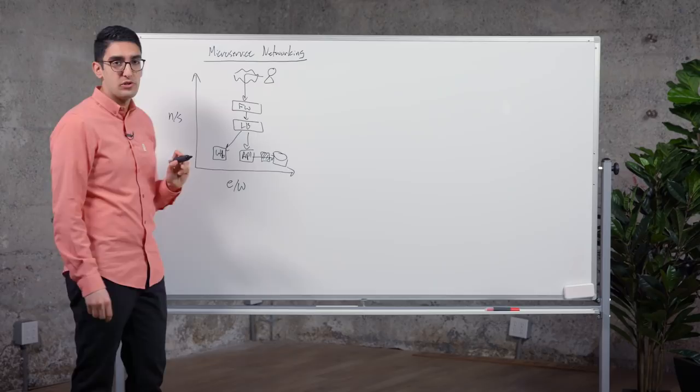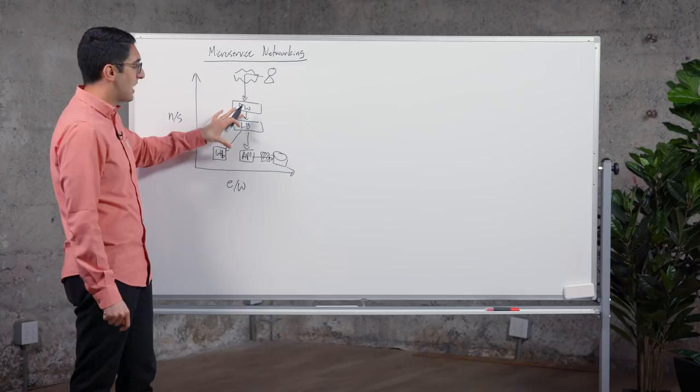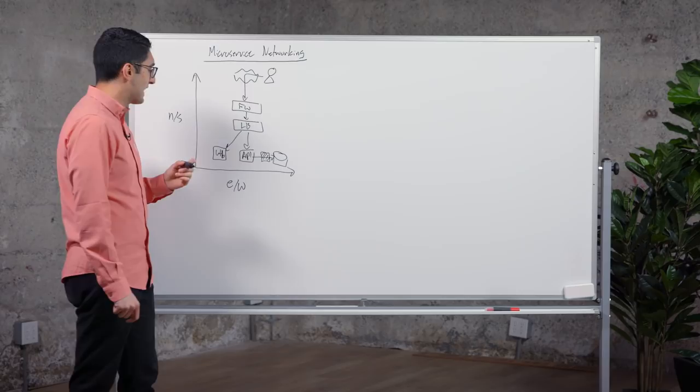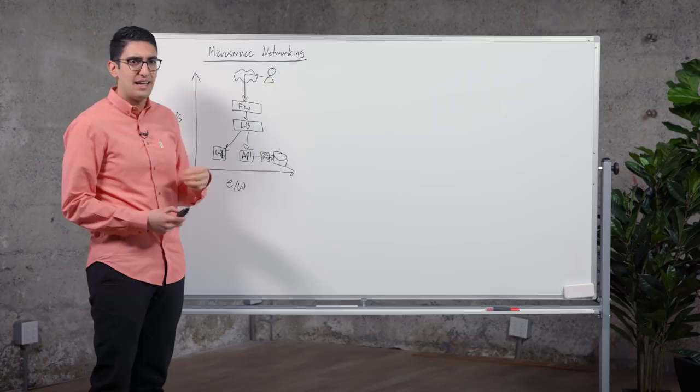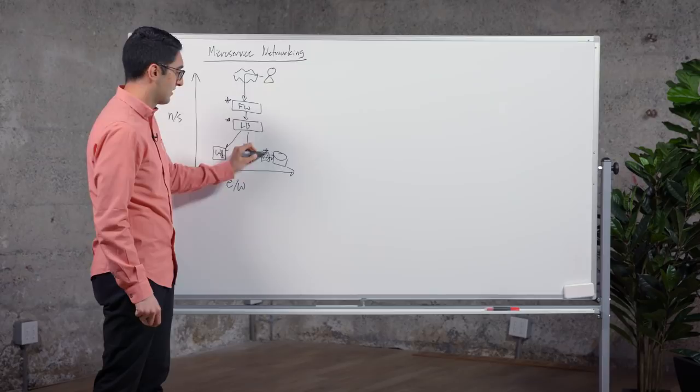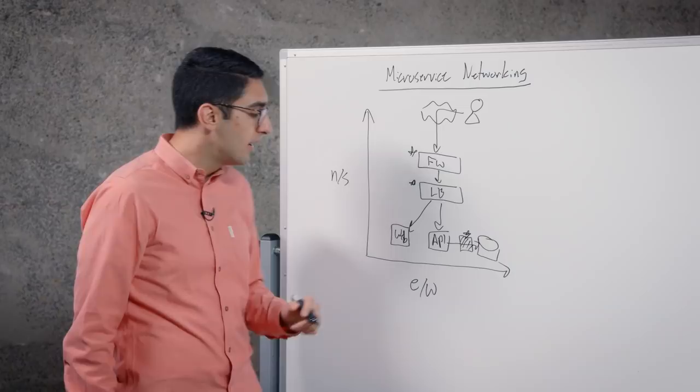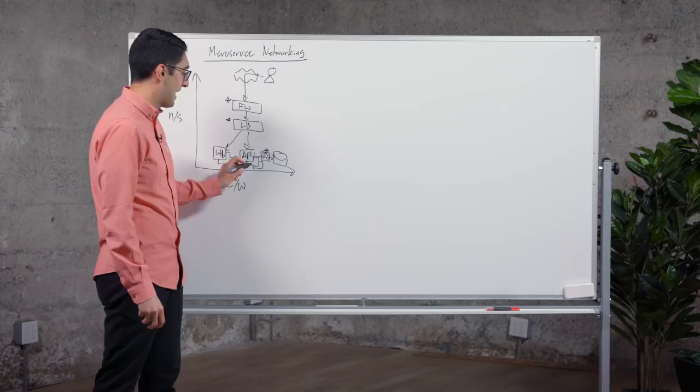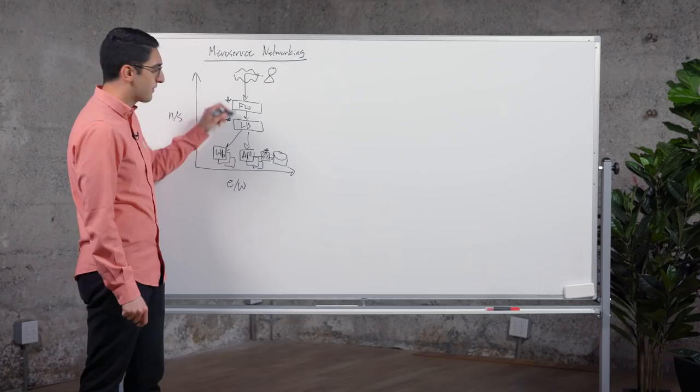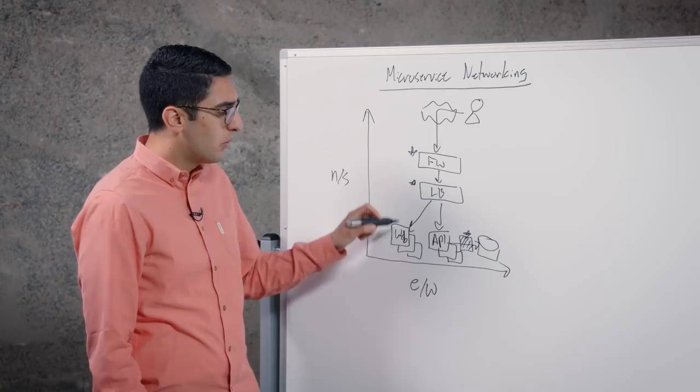As we start to talk about these challenges within the context of microservices, in a traditional world, these pieces were all relatively static, as well as some of the key network components were hardware. As we talk about microservices in a cloud environment, we can't necessarily ship our hardware devices to the cloud, so some of these things have to be treated and managed like software. The other thing is our applications become much more dynamic. We might want to be able to push five or ten updates a day to our web server. We might want to dynamically scale up and down our API servers based on load. As we start to do these things, we put pressure on these different networking pieces.